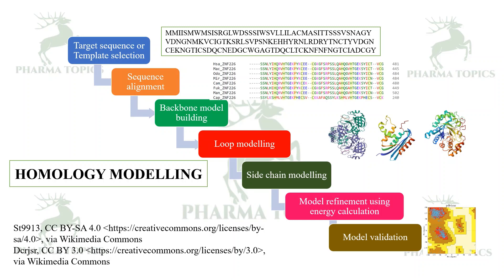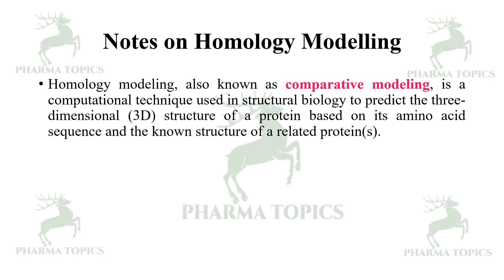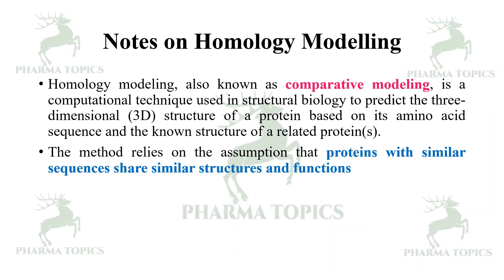Homology modeling, also known as comparative modeling, is a computational technique used in structural biology to predict the 3D structure of a protein based on its amino acid sequence and the known structures of related proteins. This method relies on the assumption that proteins with similar sequences share similar structures and functions.